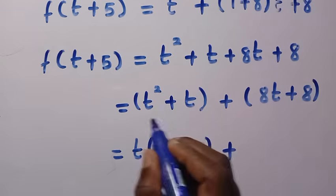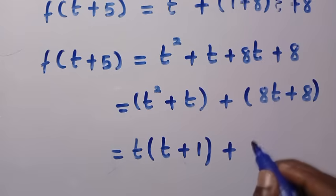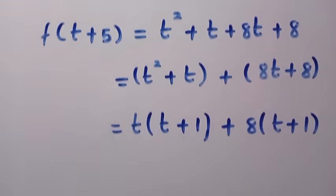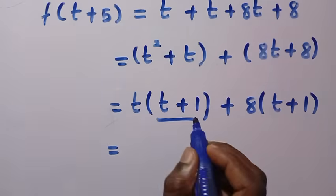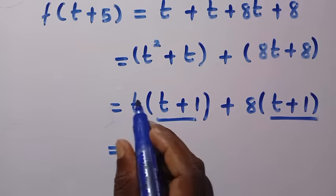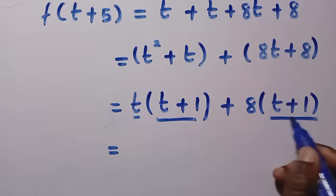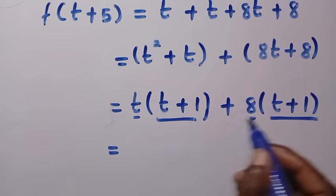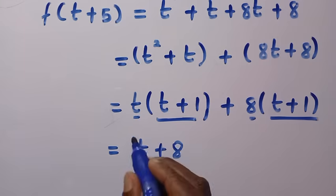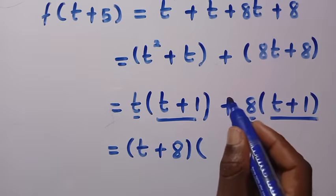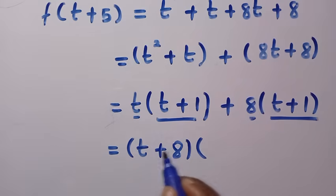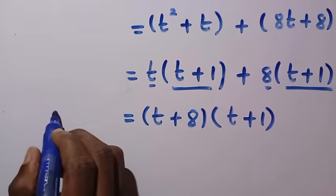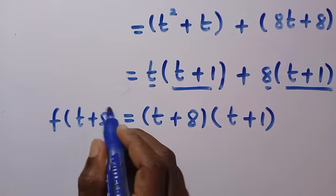From the second group, the common factor is 8, not a letter. Factoring out 8 gives 8(t+1). Now we can see that both groups have (t+1) as a common factor — the first with coefficient t and the second with coefficient 8. So we take (t+1) out, giving us f(t+5) equals (t+8)(t+1).